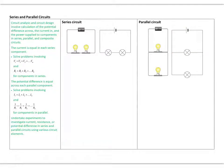Over here we have a parallel circuit, which has basically two loops within it — each light is within its own loop. A parallel circuit could have a third or fourth light, or more resistors, coming off it.